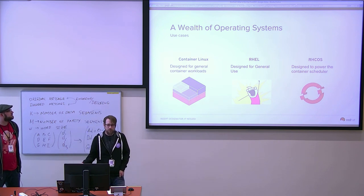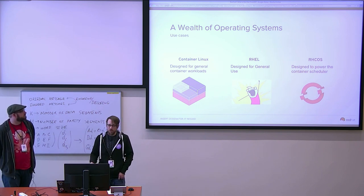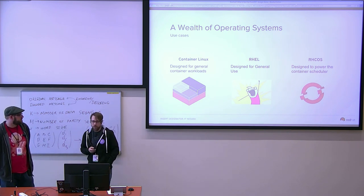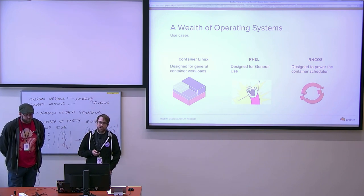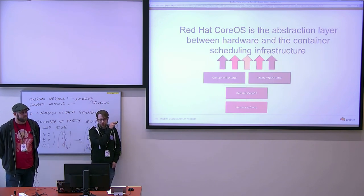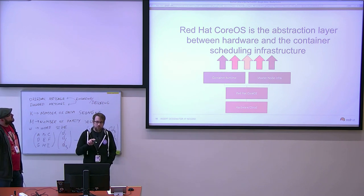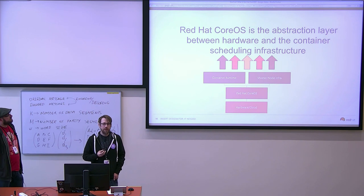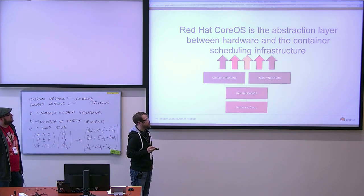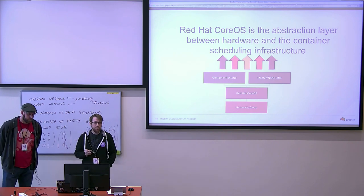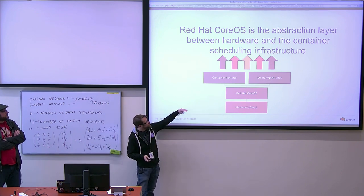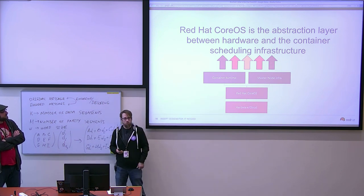Comparing the three options: Container Linux is designed for general container workloads, RHEL gives you literally all the things — you can do whatever you want but it's on you to keep things updated — and Red Hat CoreOS is designed specifically to power a container scheduler, in this case OpenShift. We are really the abstraction layer between the hardware and above. We are a component of OpenShift no different than the Kubelet or the logging layer — it is all together, all included as one unit.